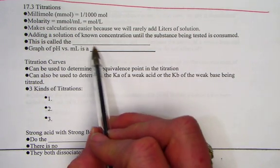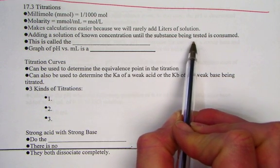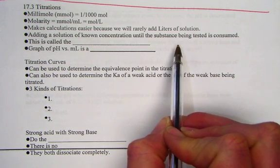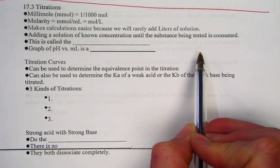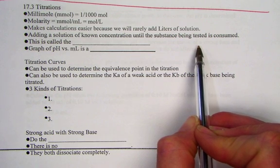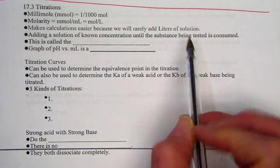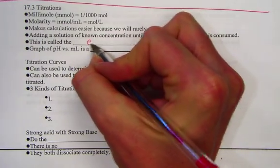When we look at adding a solution of known concentration until the substance being tested is consumed, what that really is showing us is an acid-base neutralization. If I'm adding a base to an acid, the acid gets consumed until it has been neutralized. What this is simply known as reaching the equivalence point.